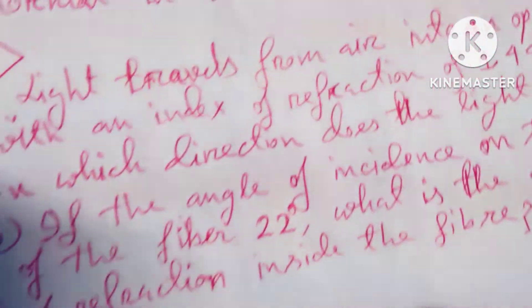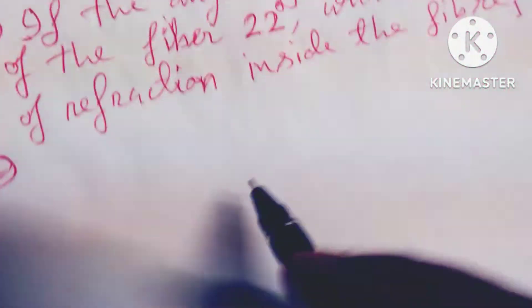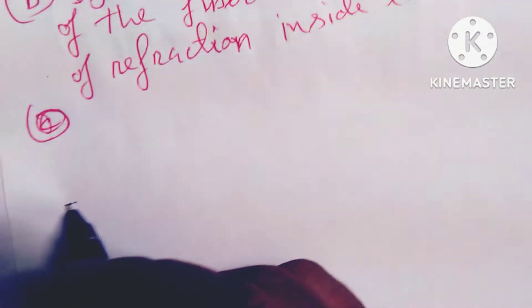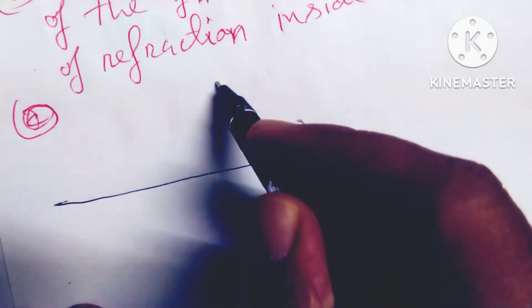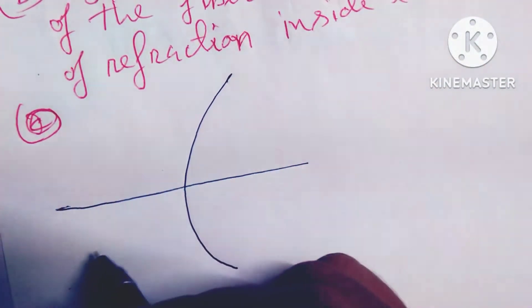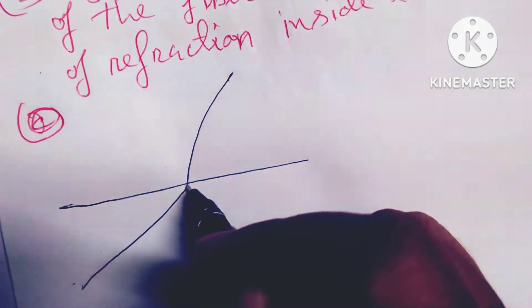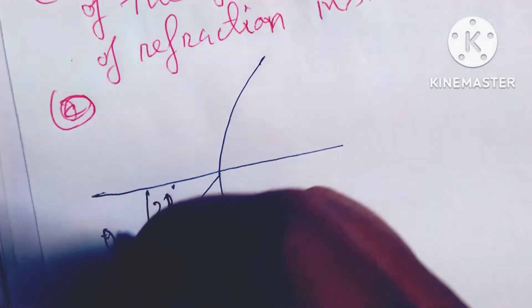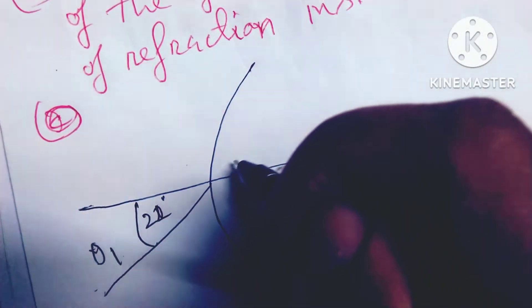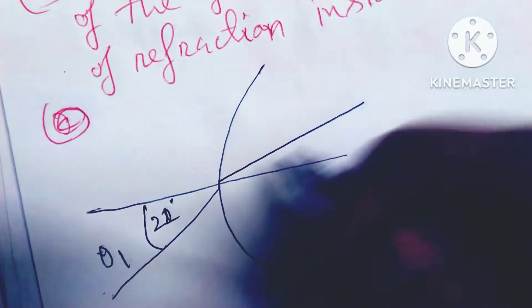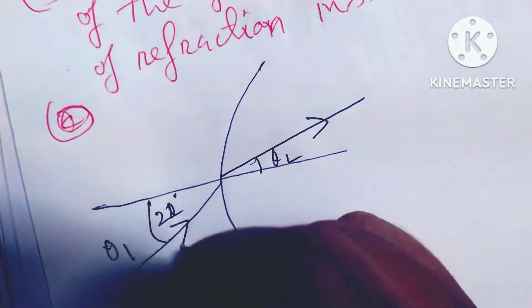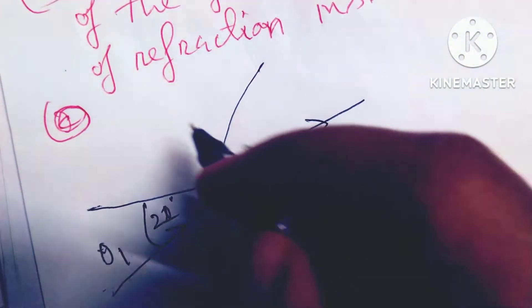This problem is very interesting, so let's draw the diagram. Here is the boundary, and light is going in at 22 degrees. This is theta 1, and this is theta 2 — I don't know the value — and light is going from this side to this side.